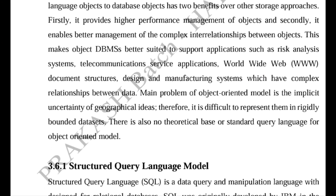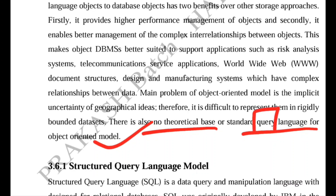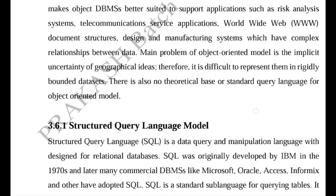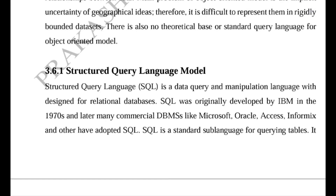The main problem of the object-oriented model is the implicit uncertainty of geographical ideas, making it difficult to represent them in rigidly bounded datasets. There is also no theoretical base or standard query language for the object-oriented model. To query, one must send a request or message to get a response, and the response depends on the state and characteristics of the object being queried.